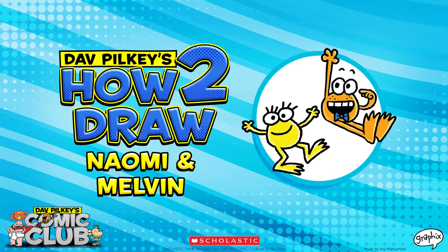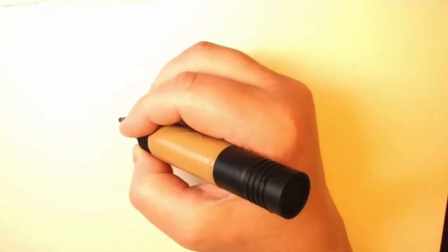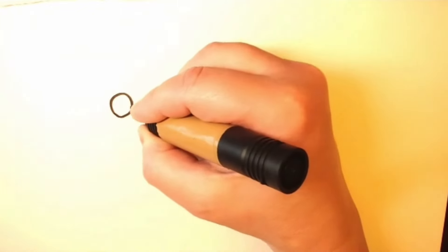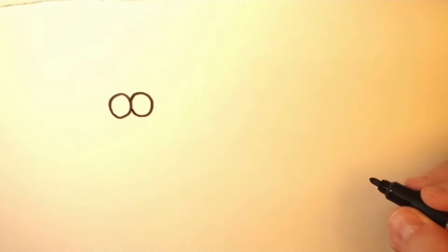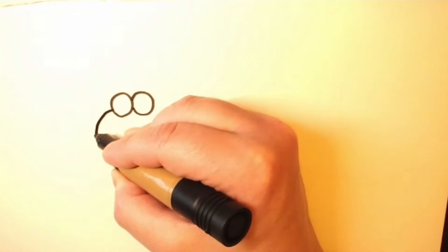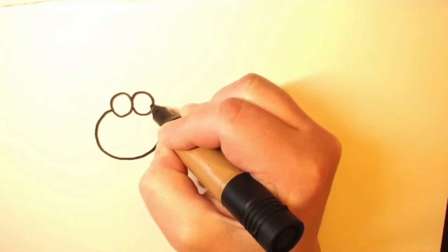Hey everybody, this is Dave Pilkey and today we are going to learn how to draw the baby frogs. If you read Dogman Fetch 22 you know there's 22 baby tadpoles in that book, but in the next book Grime and Punishment and in all future books the tadpoles have developed into baby frogs so they have arms and legs.